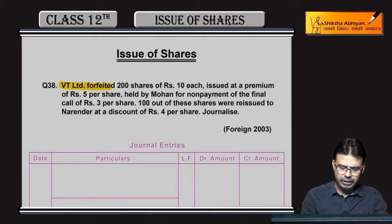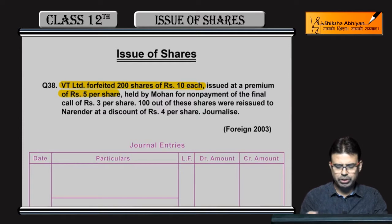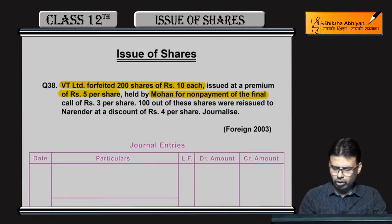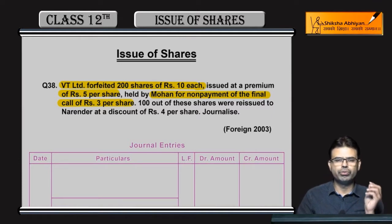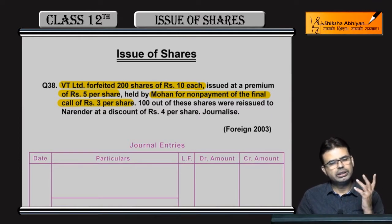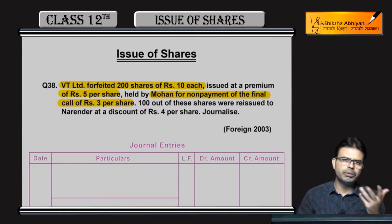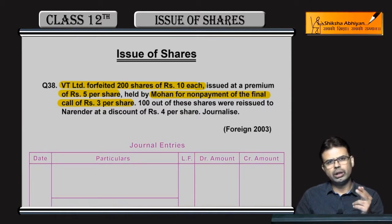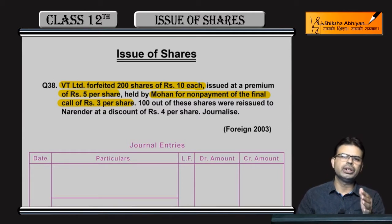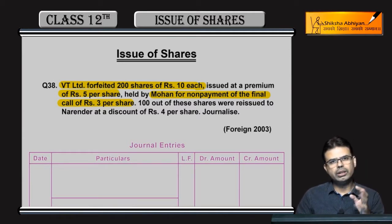Rao VT Limited ne 200 shares, 10 rupee wale, profit kiya hai jo ki 5 rupee ke premium pe issue kiya hai, held by Mohan for non-payment of final call of 3 rupees per share. Is ka matlab clear ho gaya — do tariqa se: ek toh final call 3 rupee ki hai toh isma premium ho nai sakta; doosra, question mein kuch na bataya ho toh hamesha premium at the time of allotment hota hai. Toh har tariqa se clear ho gaya ki premium hum receive kar chuke hain.